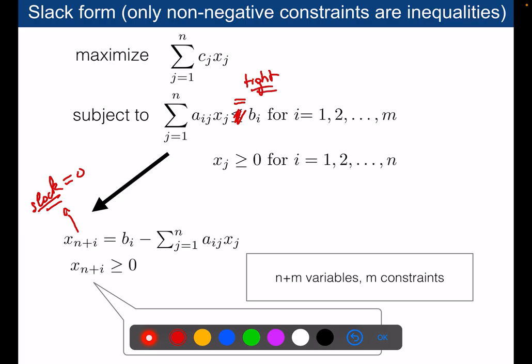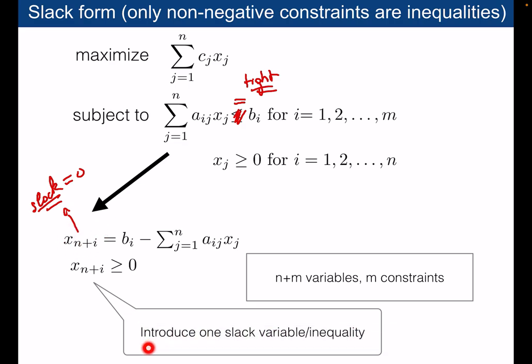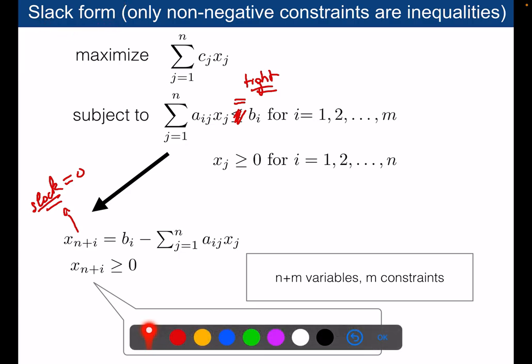But you always have a way to transform an inequality constraint into an equality constraint like this one by introducing a slack variable. So that's the standard form: equalities everywhere and for all the variables they should be non-negative.